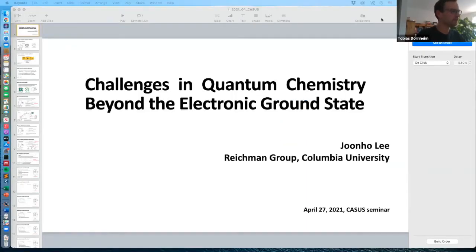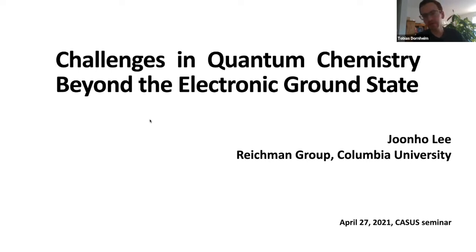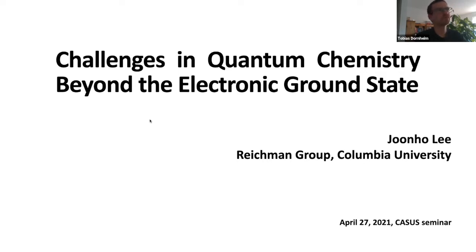It's a great pleasure to introduce Junho Lee. Junho got his Bachelor in Chemistry from Pohang University in South Korea. He earned a Master of Science in Chemistry from Caltech in the group of Professor Thomas F. Miller. In 2019, he got his PhD from UC Berkeley in the group of Professor Martin Head-Gordon. During his PhD, he also did an internship at Lawrence Livermore National Lab, where he worked with Fionn Malone. Junho has worked on different topics, including quantum Monte Carlo of Fermi systems. He has received awards for his outstanding work, including an ACS award in chemical physics for his PhD dissertation. Today he's going to talk about challenges in quantum chemistry beyond the electronic ground state.